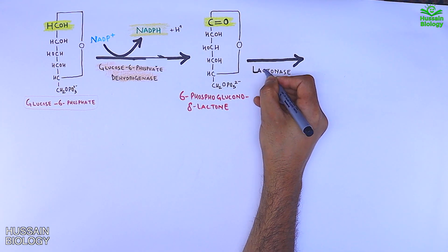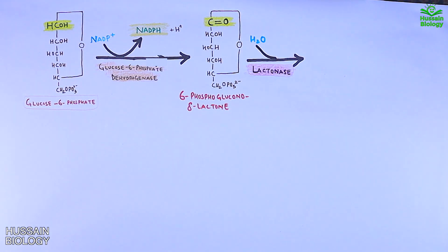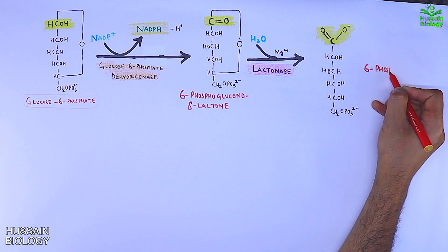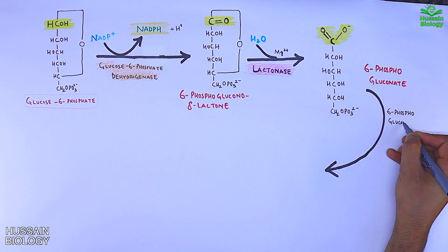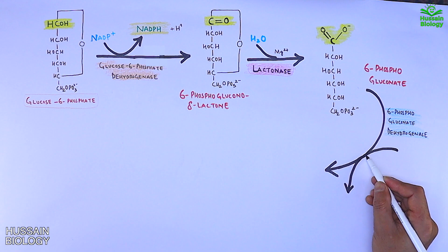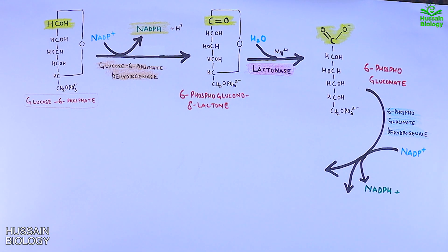Then in the next step, lactonase enzyme acts upon 6-phosphogluconolactone in the presence of water and converts it into 6-phosphogluconate. This in turn is acted upon by a dehydrogenase enzyme, where another molecule of NADP+ acts as an electron acceptor and gets reduced to NADPH.